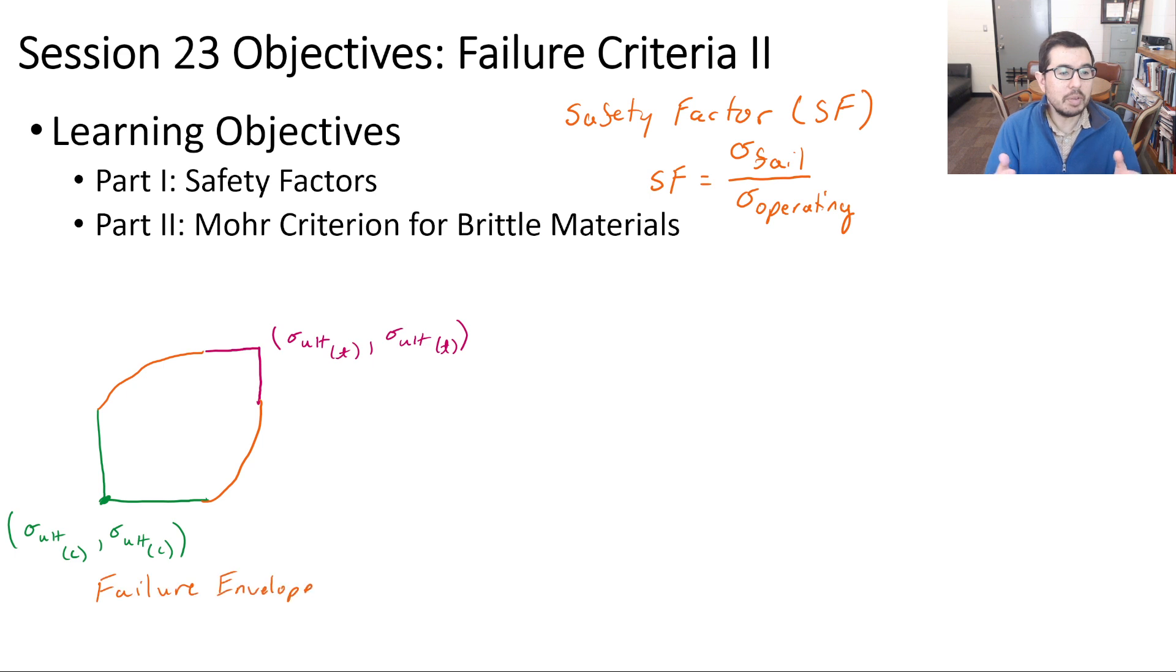The second portion will discuss a modified form of the maximum normal stress theory for brittle materials called the Moore criterion. Essentially what it does is it allows us to account for the fact that brittle materials often have a higher ultimate compressive strength than they have ultimate tensile strength.